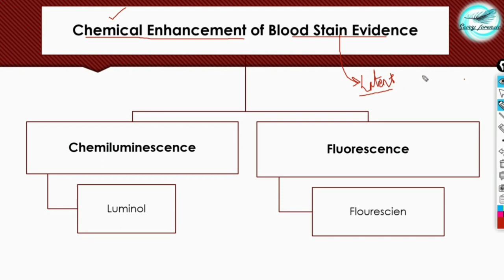There are many preliminary examinations of blood evidence, like colorimetric assays, chemiluminescence assays, and fluorescence assays. Colorimetric assays are used to identify whether a visible stain is blood or not, while chemiluminescence and fluorescence assays are used for chemical enhancement. For that, we basically use luminol and fluorescein.